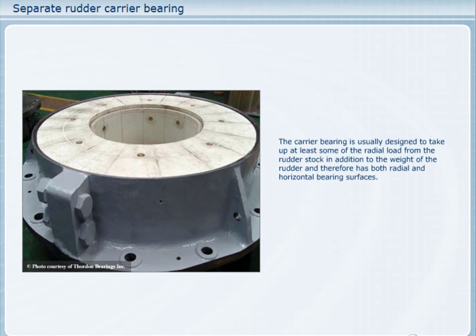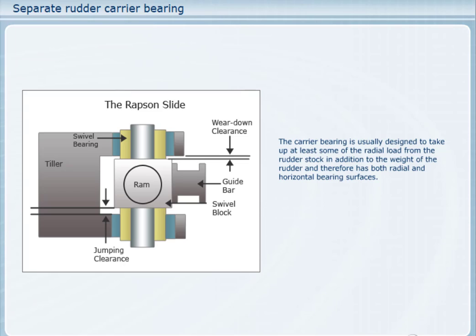It is necessary to ensure that the rams are not bent or deflected by any vertical forces, so ram type steering gears always need a separate rudder carrier bearing to support the weight of the rudder. The carrier bearing is usually designed to take up at least some of the radial load from the rudder stock, in addition to the weight of the rudder, and therefore has both radial and horizontal bearing surfaces. The alignment of the rudder stock is sometimes assisted by using a bearing surface which is conical in shape. If the carrier bearing does wear, the rudder and rudder stock move downwards, so there must be enough clearance between the bottom of the tiller and the bearings in the Rapson slide, to avoid the weight of the rudder being taken by the rams, which would bend the ends of the rams downwards and lead to leakage of hydraulic fluid.